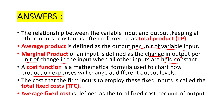What is total fixed cost? The cost that the firm incurs to employ the fixed inputs is called as total fixed cost. What is average fixed cost? Average fixed cost is defined as the total fixed cost per unit of output. The formula for AFC is: AFC = TFC divided by Q.